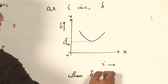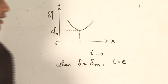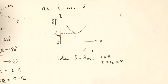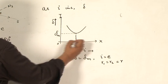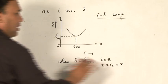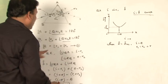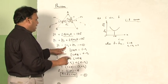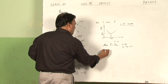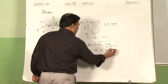When δ equals δM, then angle i equals angle e. Similarly, r1 is also equal to r2. Let us assume it equals R. This graph is called the i-δ curve. Using this fact, we rewrite equation 1: when δ equals δM, r1 equals r2 equals R, so angle A equals 2R, which gives angle R equals A/2.